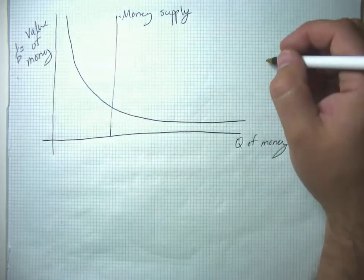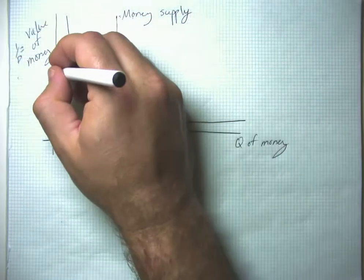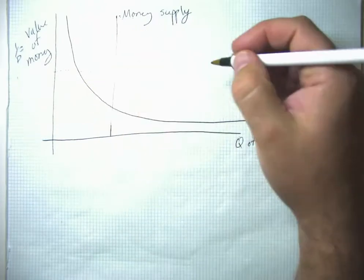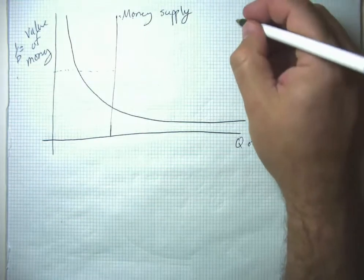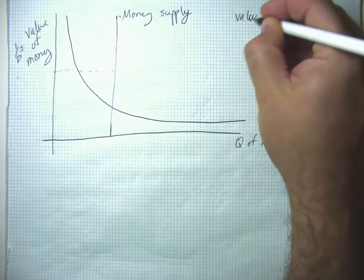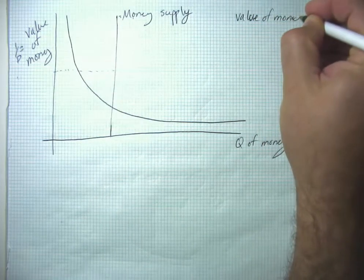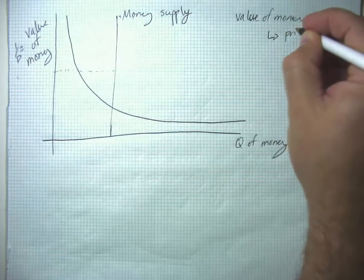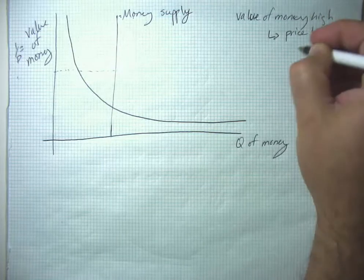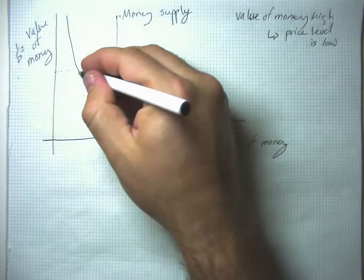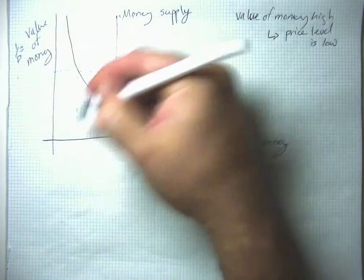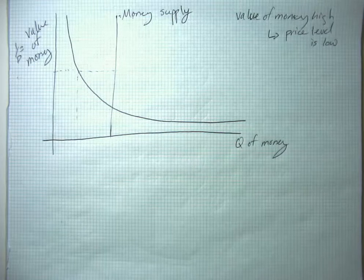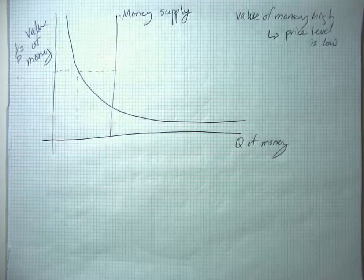Well, let's go ahead and think about what happens if the value of money starts really high, which is to say if the value of money is high, we could equivalently say the price level is low. And at this point here, people have more money in their checking account than they really want to hold in liquid form. So what they're potentially going to do is go out there and spend it.